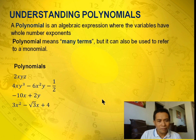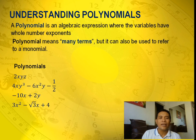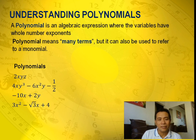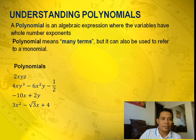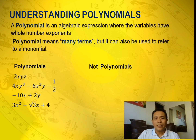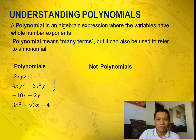3x squared minus the square root of 3x plus 4. That's an example of a polynomial because the exponent of x is 2 and 1, so it's a whole number. This time, we'll give you an example of expressions that are not polynomials.